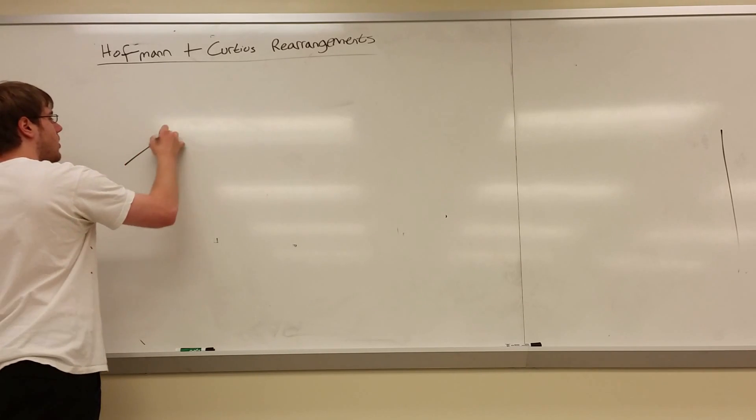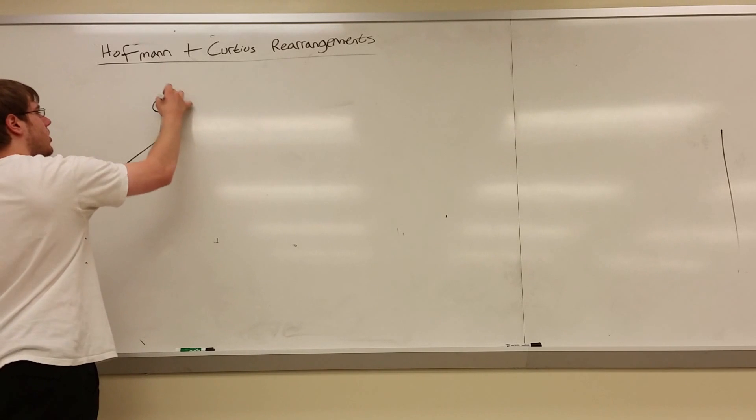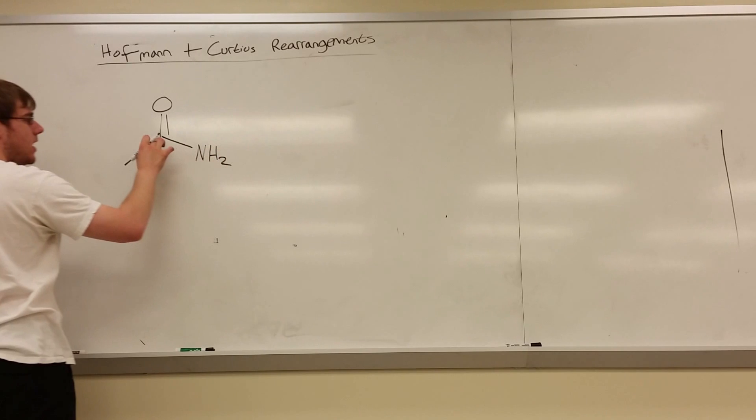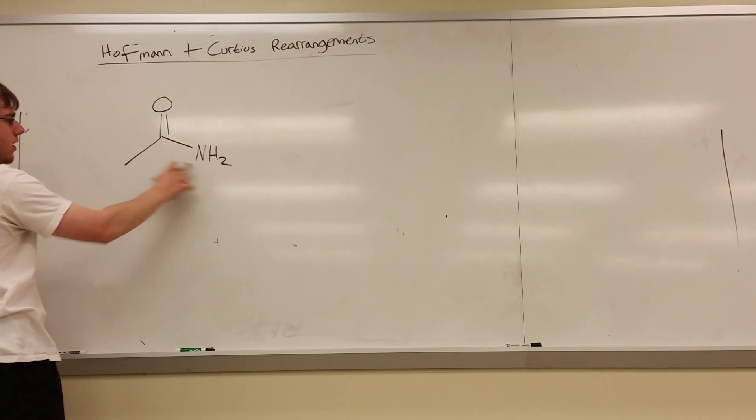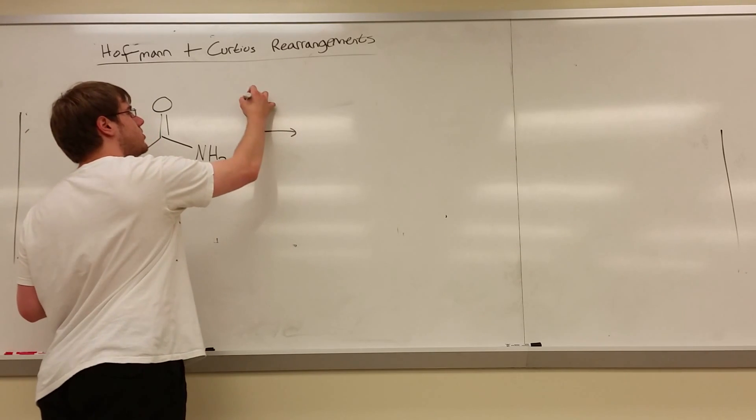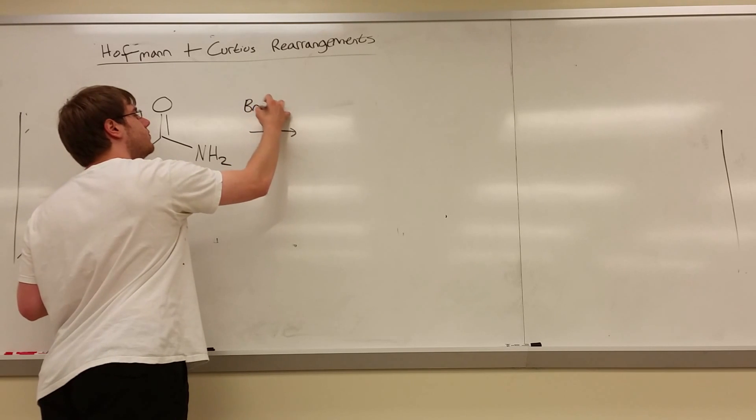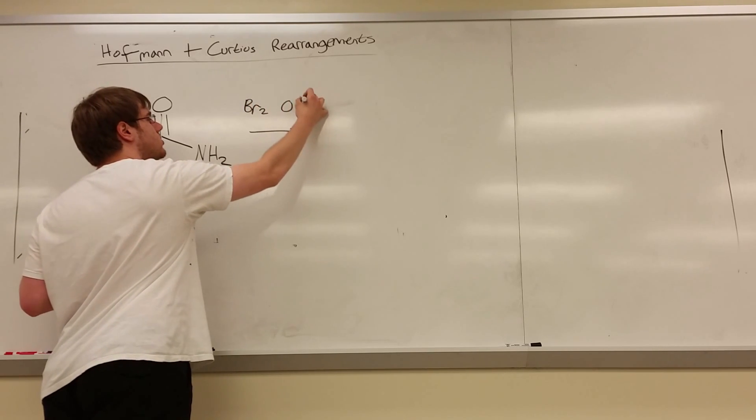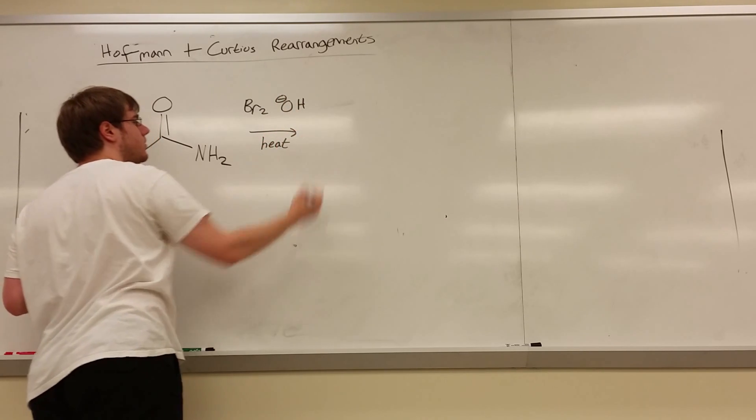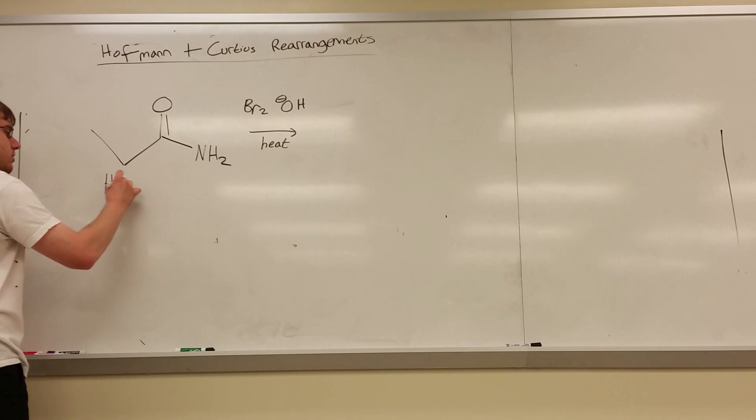Let's start with the Hoffman rearrangement. The Hoffman rearrangement will always involve two things: a primary amide, meaning a carbonyl with an NH2 on it, and however many carbons attached over here. And then over the arrow, you will always see Br2 and OH minus, and usually there's some heat to go along with it.